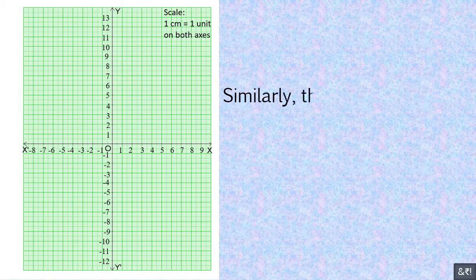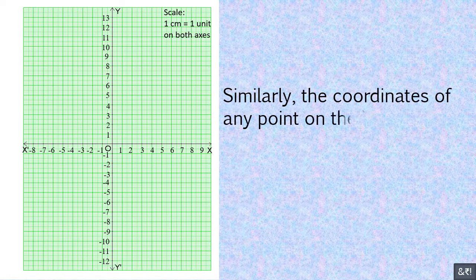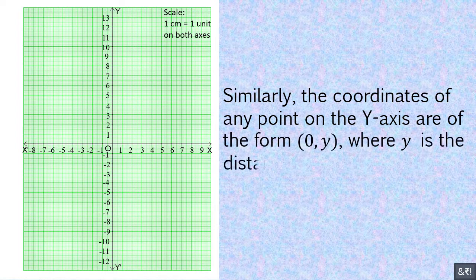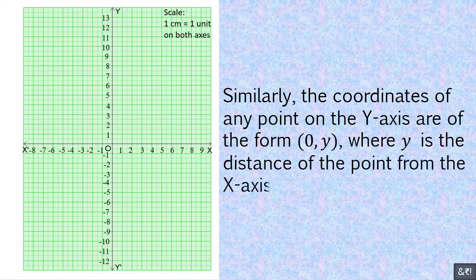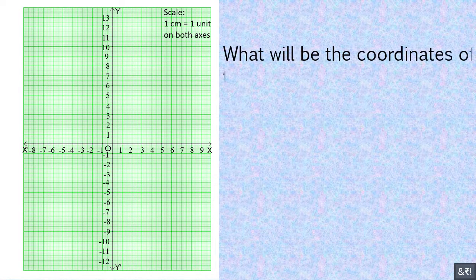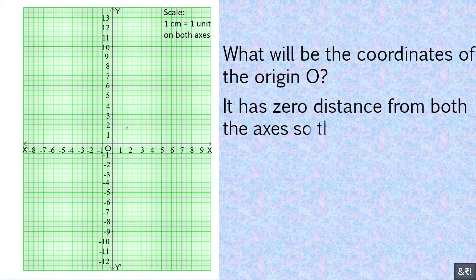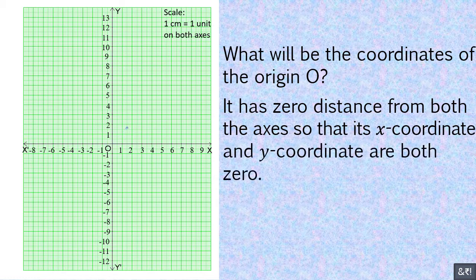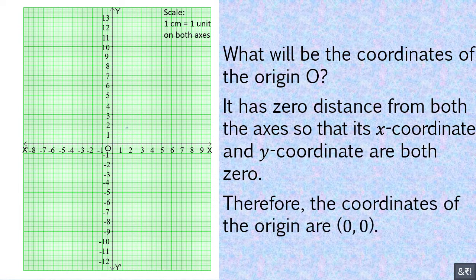Similarly, the coordinates of any point on the y-axis are of the form (0, y), where y is the distance of the point from the x-axis. Example: what will be the coordinates of the origin O? It has 0 distance from both axes, so its x-coordinate and y-coordinate are both 0. Therefore, the coordinates of the origin are (0, 0).